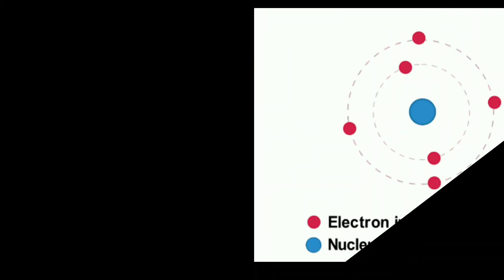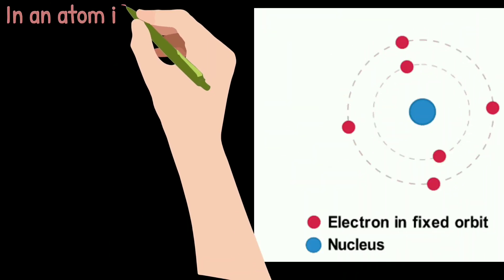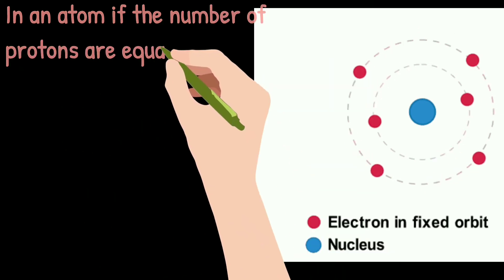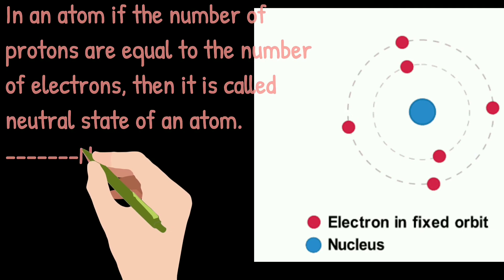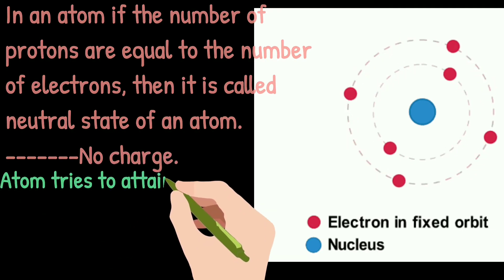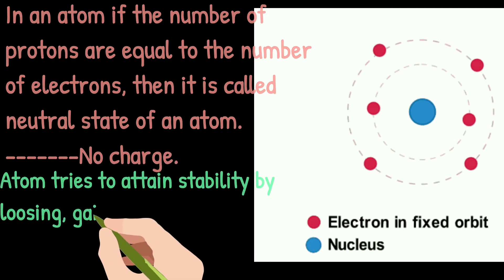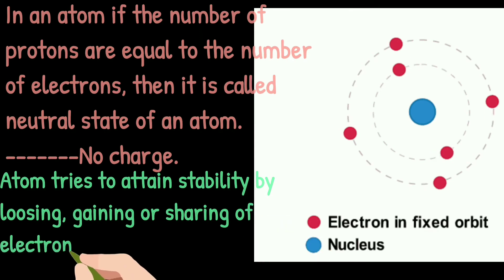In an atom, if the number of protons are equal to the number of electrons, then it is called neutral state of an atom, that is, it has no charge. Atoms try to attain stability by losing, gaining, or sharing of electrons.